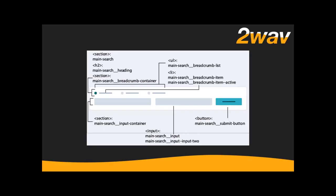I know it's main-search, so that's my block and everything under it is elements. Here's an H2 that doesn't appear in the design — we talked about that, it's fine. I've got: heading, breadcrumb-container, input-container for the row of inputs and button. I like a naming scheme where stuff inside something is named 'thing-container.' Then an unordered list for the breadcrumb list, breadcrumb-item, and breadcrumb-item--active.